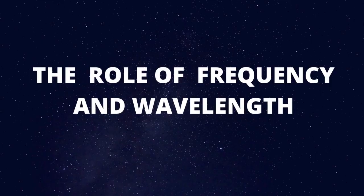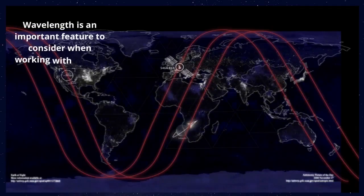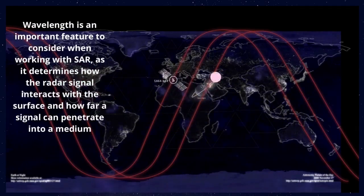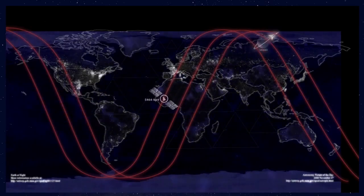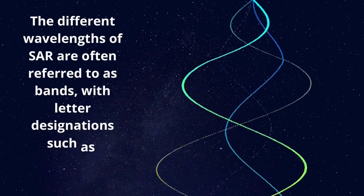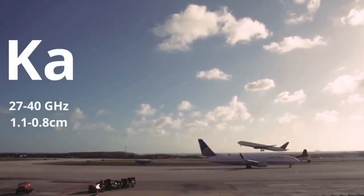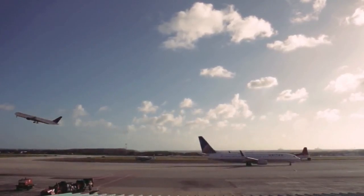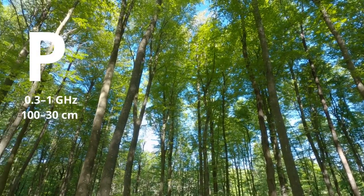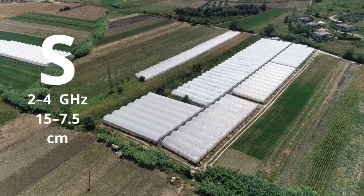The role of frequency and wavelength is also important. It determines how the signal interacts with surfaces and penetrates mediums. These wavelengths are referred to as bands with different letter designations. The K, C, P and S bands each have a specific range of frequency and wavelength.